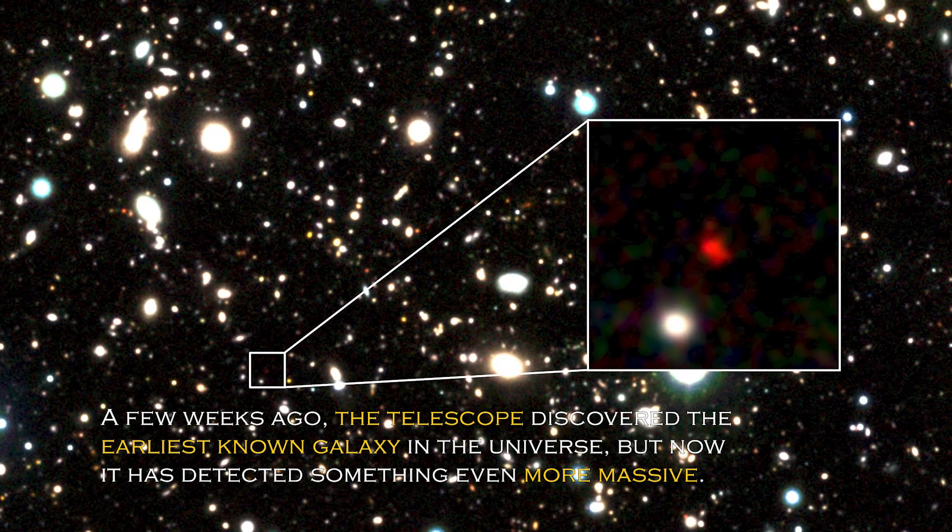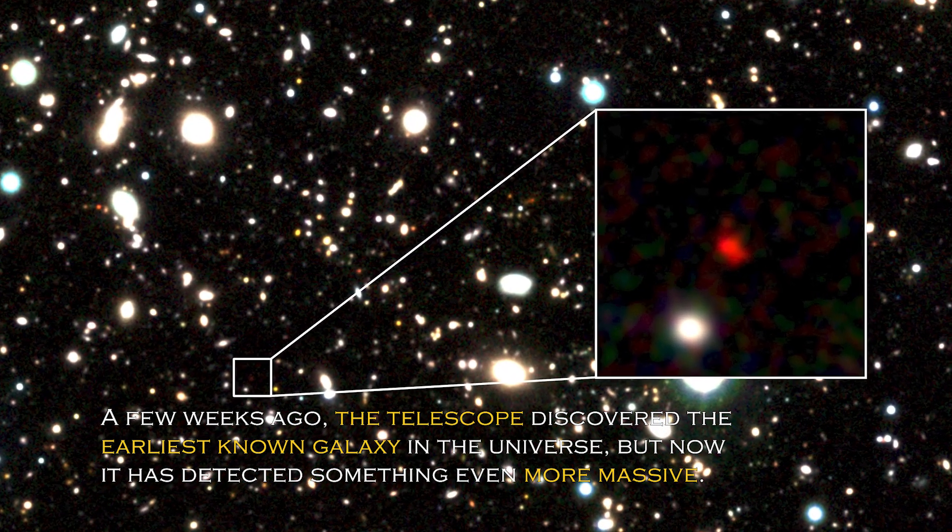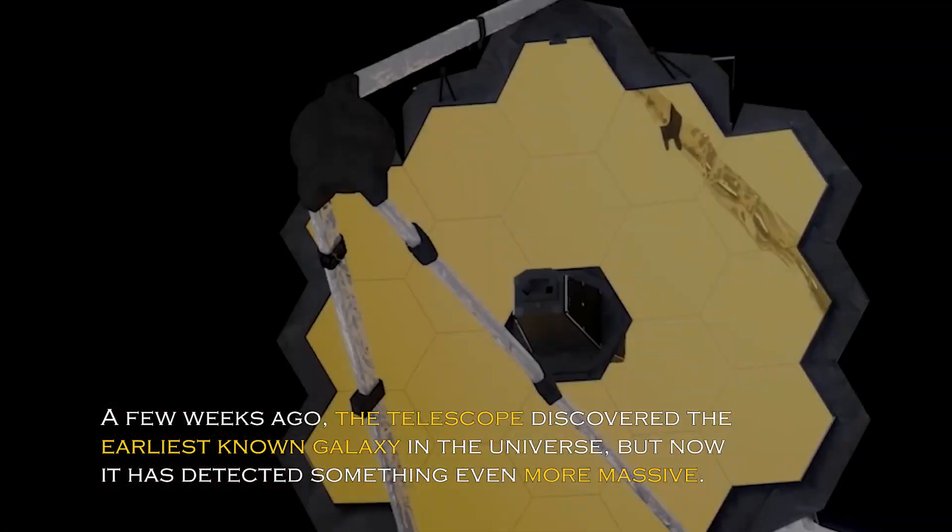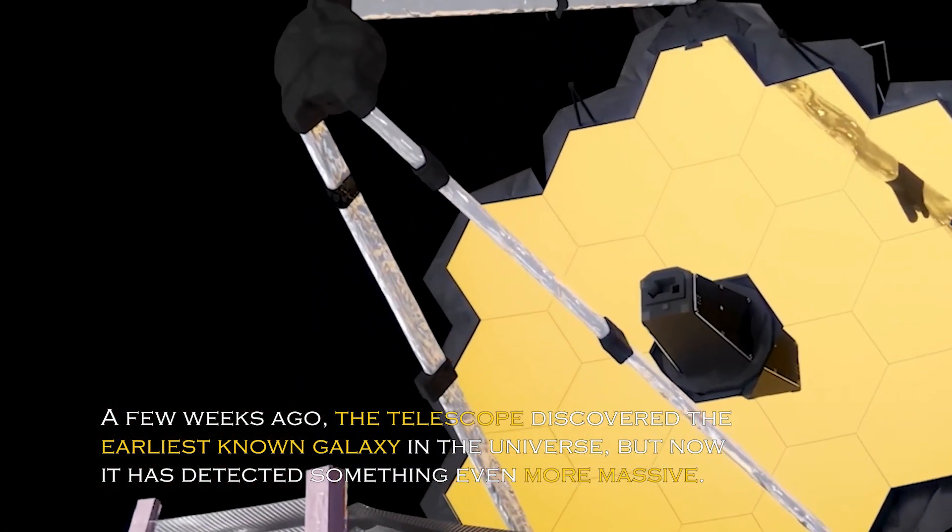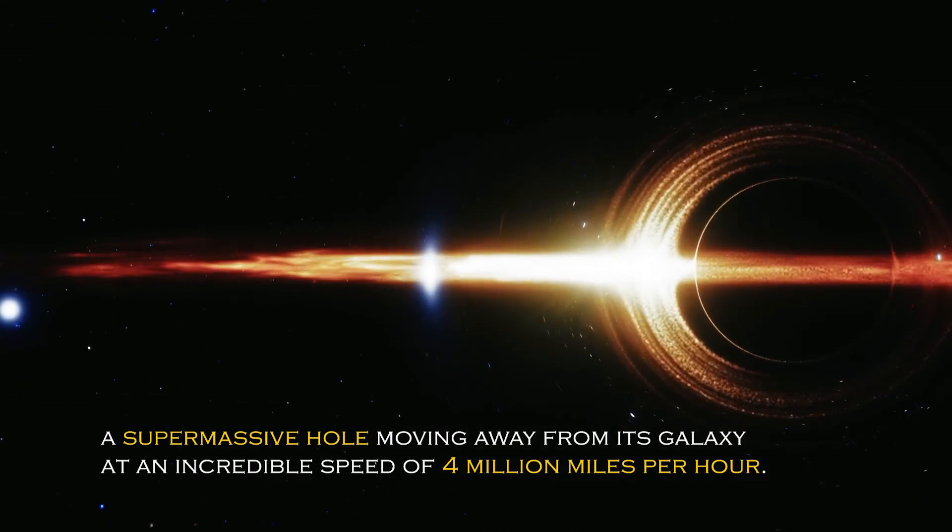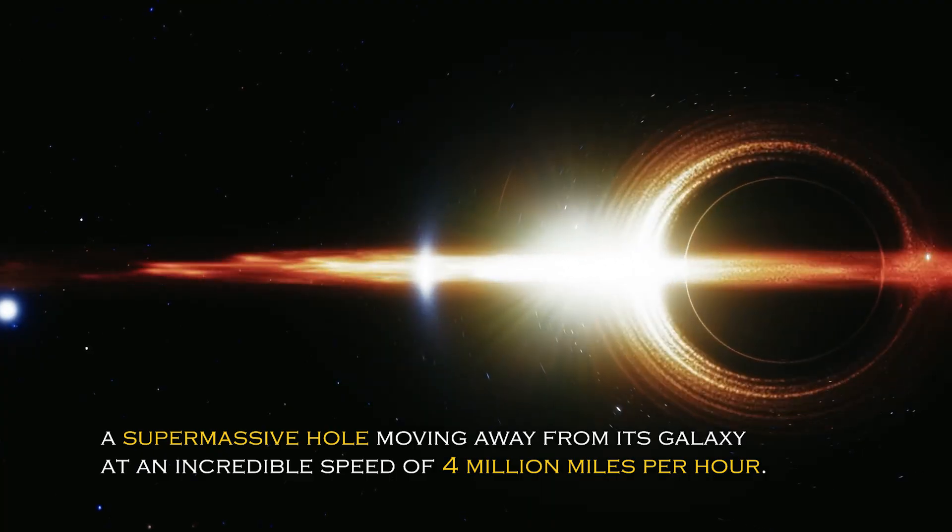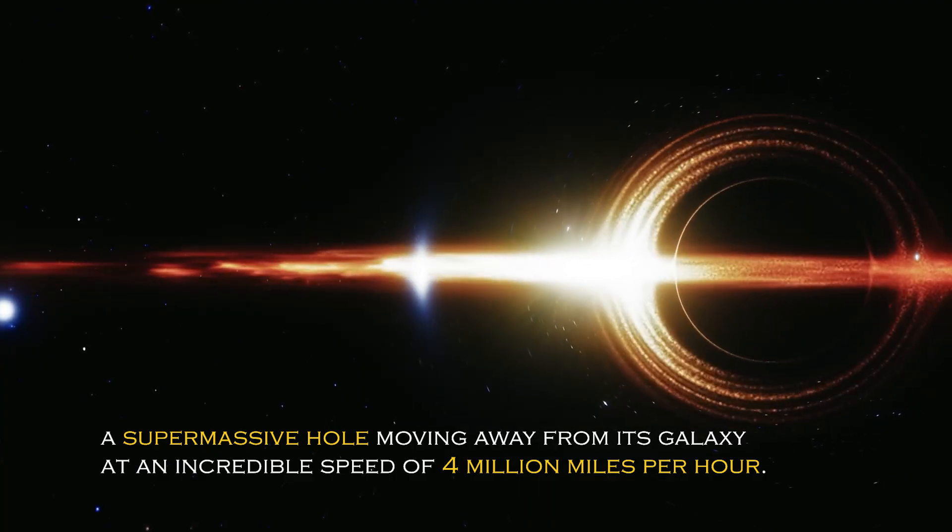A few weeks ago, the telescope discovered the earliest known galaxy in the universe, but now it has detected something even more massive – a supermassive black hole moving away from its galaxy at an incredible speed of 4 million miles per hour.